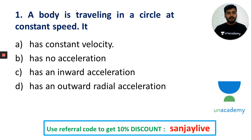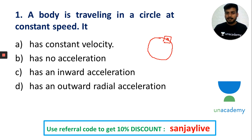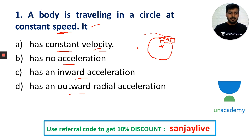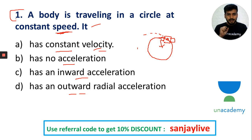When an object travels in a circular pathway at constant speed, its speed is constant but the velocity is not constant. If velocity were constant, acceleration would be zero. However, acceleration is not zero — there is an outward radial acceleration. This is because velocity is a vector quantity, and even at constant speed on a circular path, the direction changes.